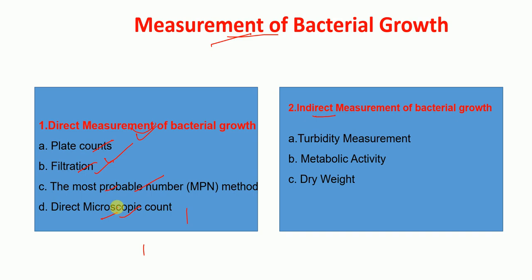Whereas indirect measurement of bacterial growth includes turbidity measurement, metabolic activity, and dry weight. In the direct method, we directly count the number of bacteria. Whereas in the indirect method, we do not count the number of bacteria. However, our measurement is based on other parameters such as turbidity, metabolic activity, and dry weight.